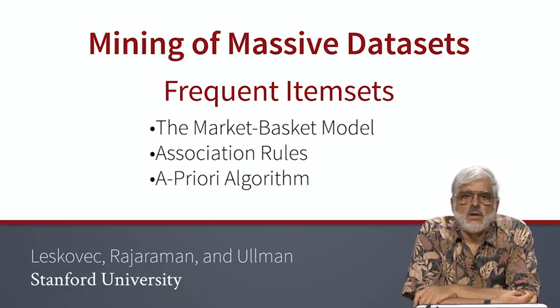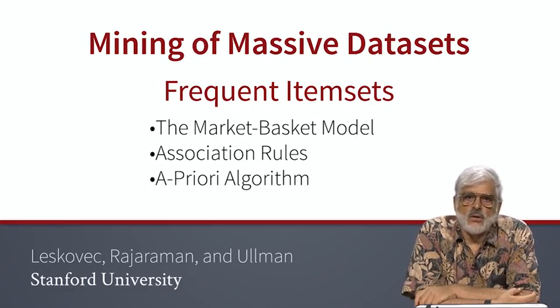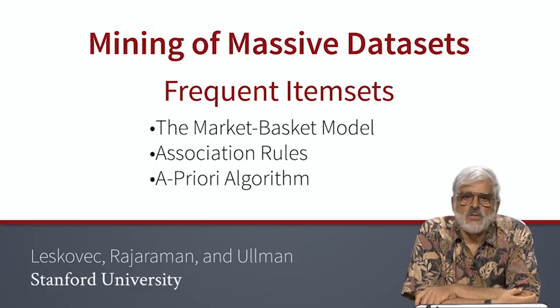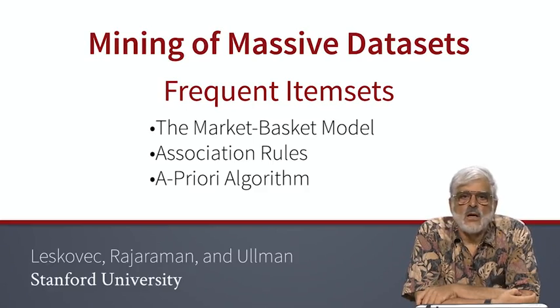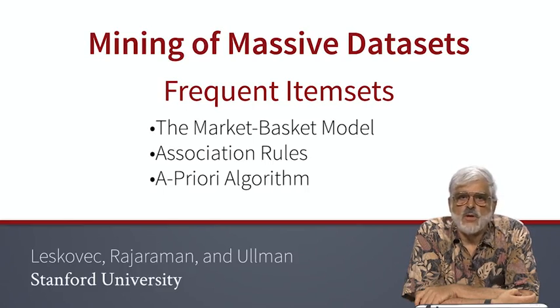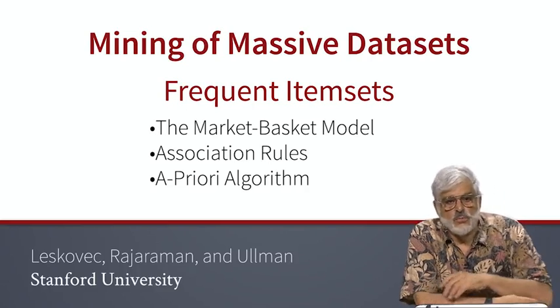In a rough outline, we're going to start with a model of data called the market basket model, where data consists of sets of items. The sets are called baskets. A set of items is called frequent if it appears in some large number of baskets. We'll talk about association rules, which are statements that when a certain set of items are found in a basket, it is unusually likely that another item will also be found there. Finally, we'll give the a priori algorithm for finding frequent item sets. This algorithm, while it has been improved upon over the years, is the fundamental starting point for all of these improvements.